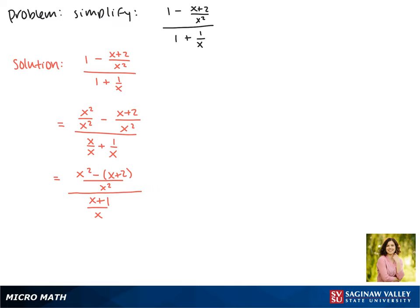Since x plus 2 is being subtracted, this becomes a negative x and a negative 2. So we'll write this as x squared minus x minus 2 over x squared divided by x plus 1 over x.